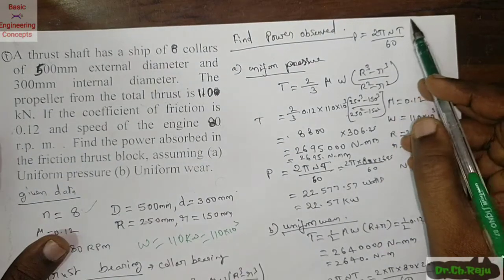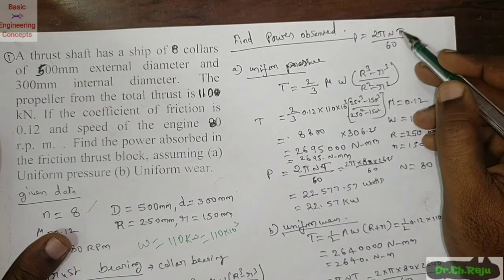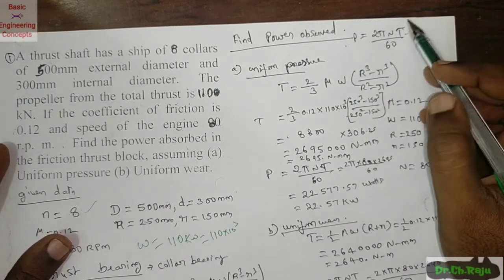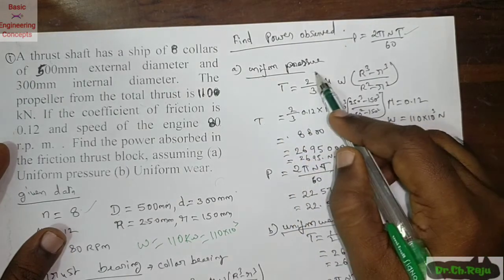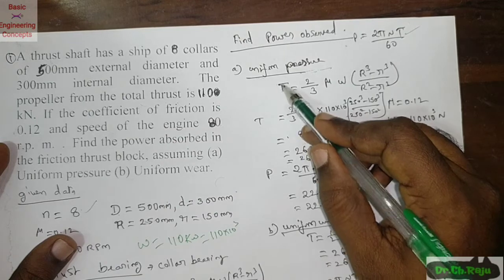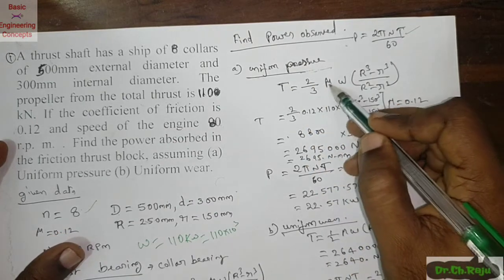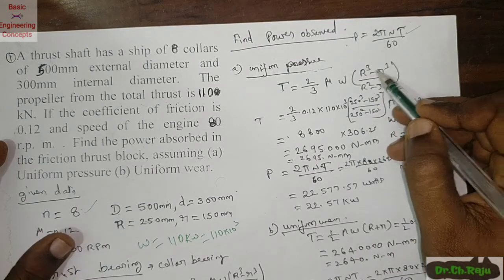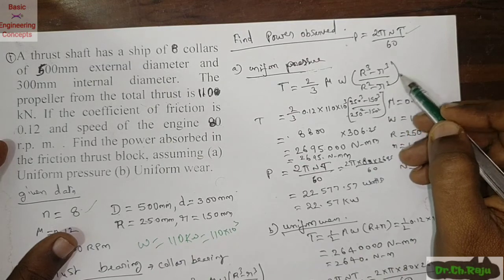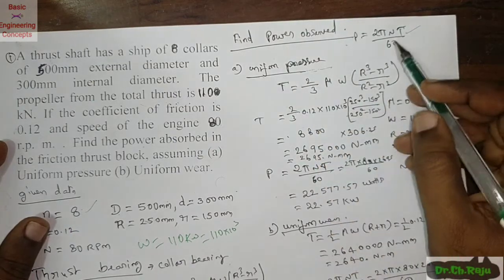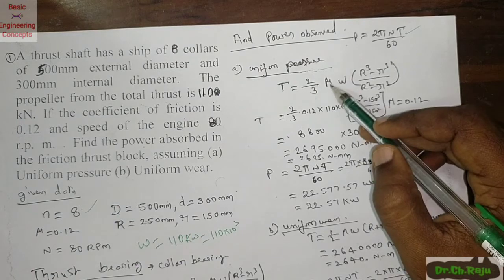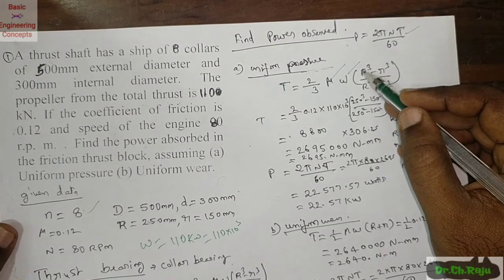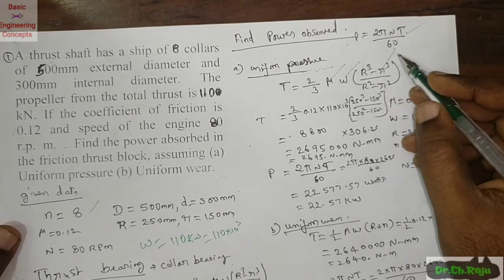For the first theory — uniform pressure consideration — the torque formula is T = (2/3) × μ × W × (R³ − r³)/(R² − r²), where μ is the coefficient of friction, W is the bearing load, R is the external radius, and r is the internal radius.